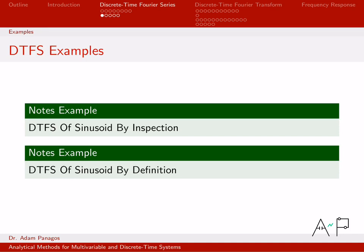Now it's time to start working some examples and actually using that equation and finding the DTFS coefficients of different signals. Before we actually dive in and use the equation from the last video though, we're going to find the discrete time Fourier series of a periodic sinusoid by doing something I call the inspection method.